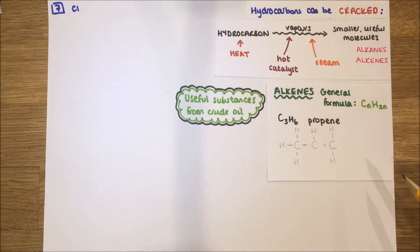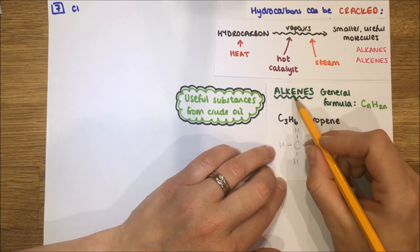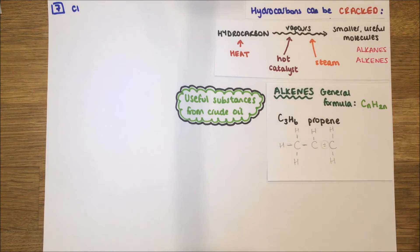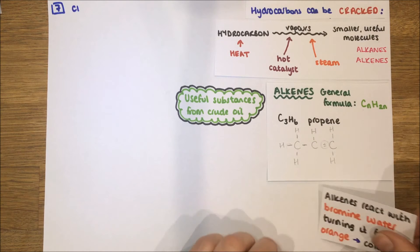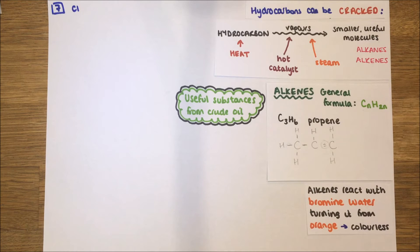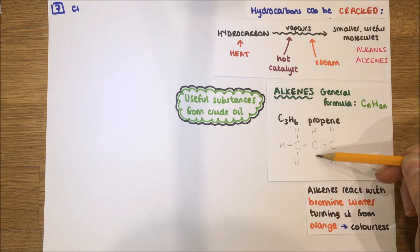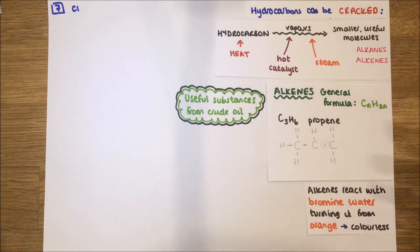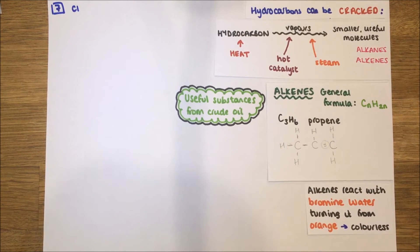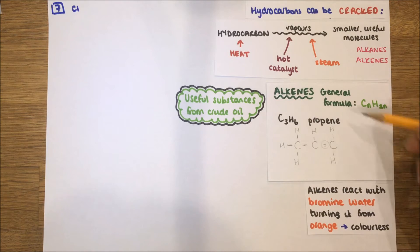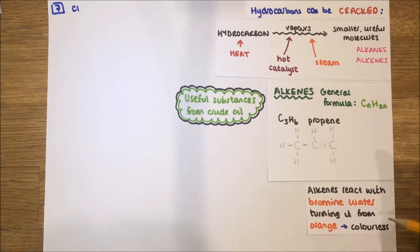You might want to practice drawing alkenes. Remember the double bond — alkene has a double 'e', so it has a double bond. You can test for the presence of an alkene, which is a very common exam question, using bromine water. Bromine reacts with the double bond. Bromine water is an orangey-brown colour. If you add it to an alkene it turns colourless; if you add it to an alkane it stays orangey-brown. A very good test to identify whether something is an alkene or an alkane.